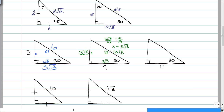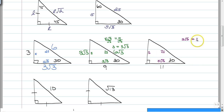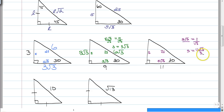The last example is one where you have a little bit of a radical problem, because again we still have our S, our S root 3, and our 2S. But now, S root 3 is equal to 11. When you divide both sides by the square root of 3, remember you can never have a radical in the denominator. So, S is actually 11 root 3 over 3, which means this side is 11 root 3 over 3, and this is 22 root 3 over 3.